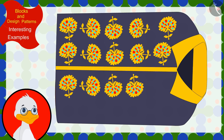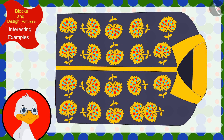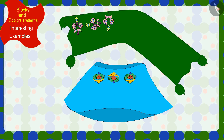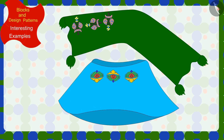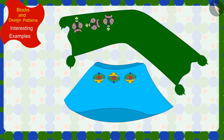Uncle too found the rule of this pattern and completed the design made on this shirt. Children, can you now help uncle find the rules of patterns made on this skirt and the dupatta?